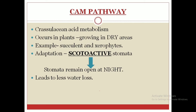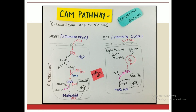Now let us look at the CAM pathway. CAM stands for Crassulacean Acid Metabolism. This pathway is mainly seen in plants that grow in dry areas where there is a shortage of water — for example succulents and xerophytes. The key adaptation is scotoactive stomata, meaning stomata that remain open at night, which leads to less water loss, helping the plant survive in low-water environments.